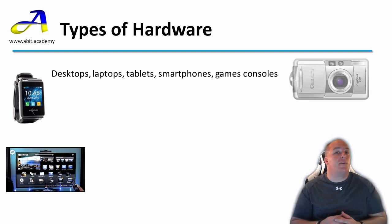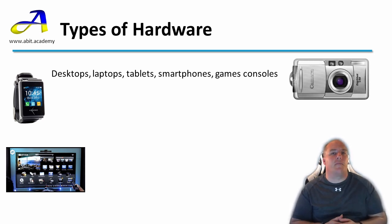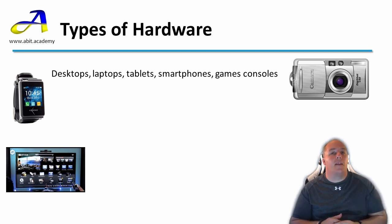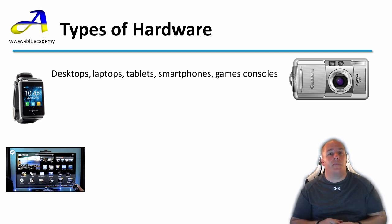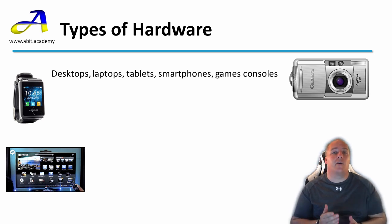The majority of cameras sold now are digital cameras. In fact, it's becoming difficult to get hold of film for a non-digital camera. These cameras store the pictures taken on a memory card, which can be moved to a computer so the photos can be copied, edited or printed.